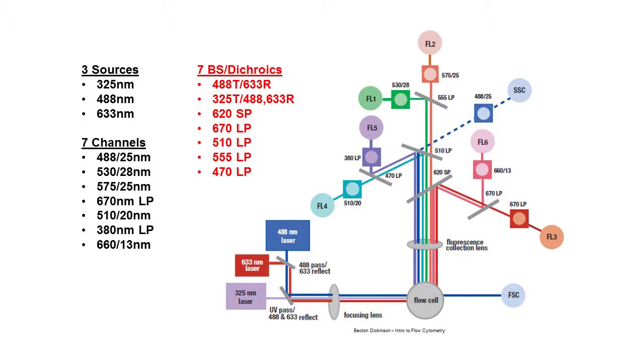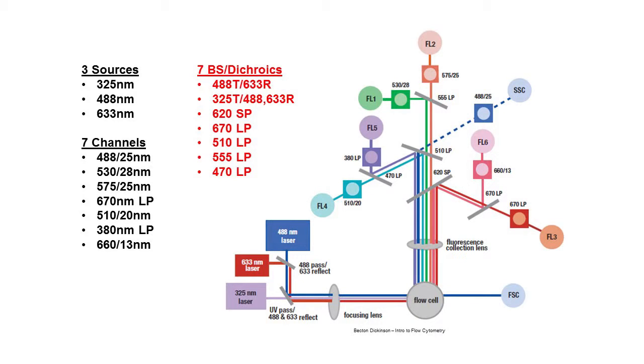So we'll look at two quick examples, two schematics from Becton-Dickinson. In this case, we're looking at the LSR flow cytometer. It's a bit tough to follow, but if you take a close analysis here, there's ultimately three sources, seven channels, and over 14 filters in this system. Again, these are all very tightly controlled bandpass filters, beam splitters, and dichroic style filters.